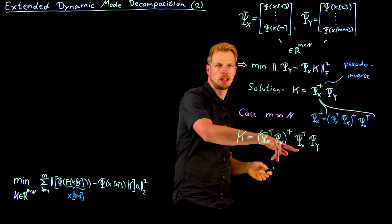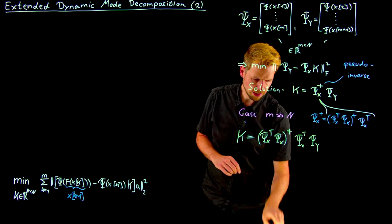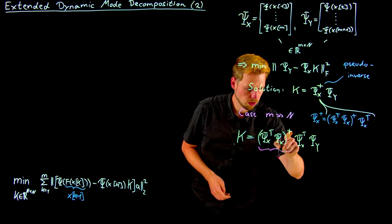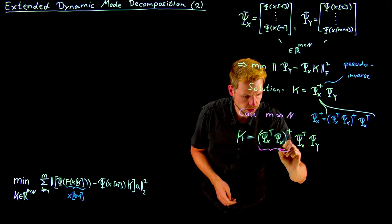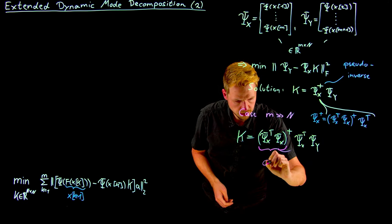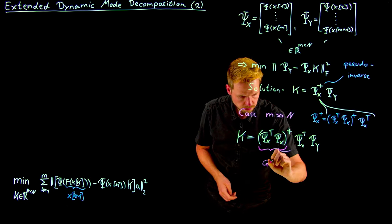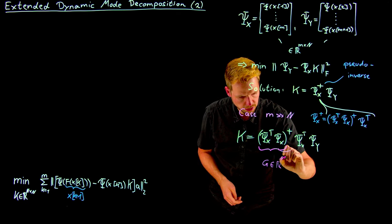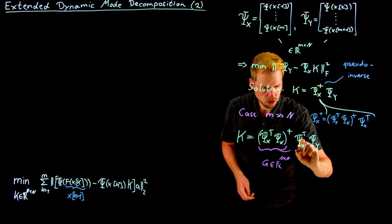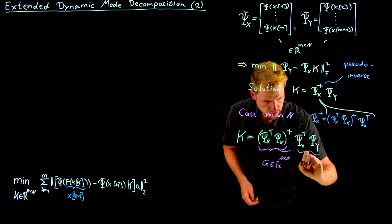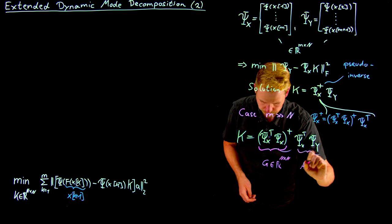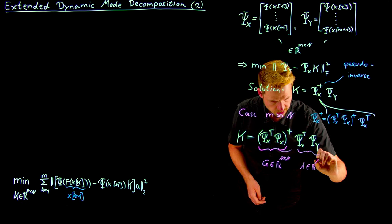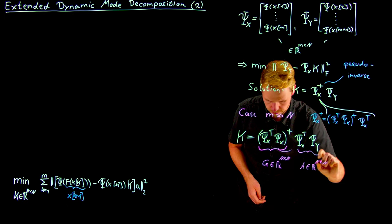And now we can give things new names, basically. So we're going to say that this is, or not with the pseudoinverse, just this expression here is a G matrix. And now if you look at the dimensions, what we get is an n by n matrix. And we are going to call this the A matrix n by n.